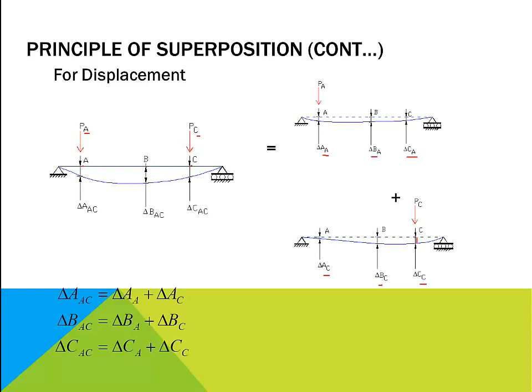Now the effective displacement at point A, B and C can be calculated by summing the displacement at the respective position due to loads calculated separately. So the resulting displacement, that is delta_AC due to combined load P_A and P_C, should be the summation of this displacement which is due to load P_A only and this displacement which is due to load P_C only. So if you add these two, we should get delta_AC.